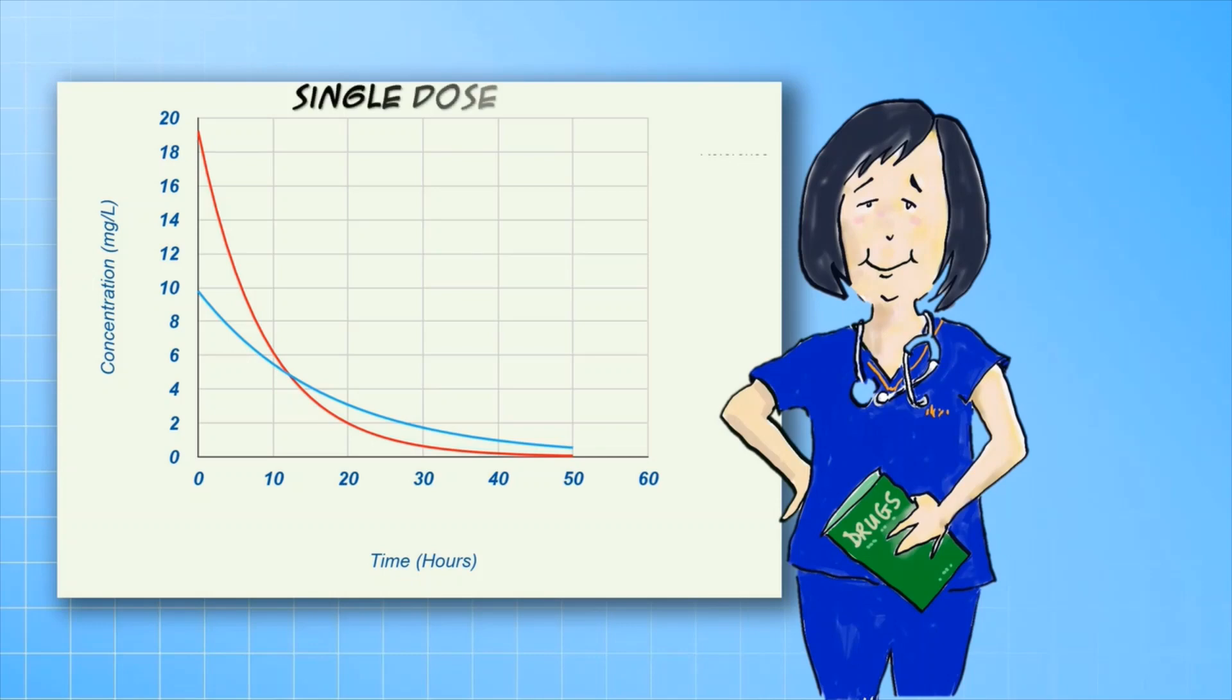Here are some graphs to show you the impact of changing the volume of distribution. You can see that reducing the volume of distribution proportionately increases concentration at zero time. Note particularly that because the volume is smaller, the elimination is faster and the half-life is decreased.